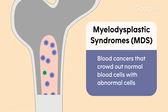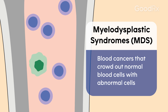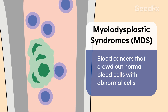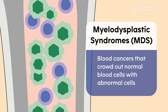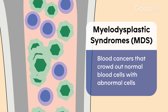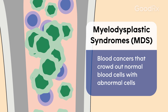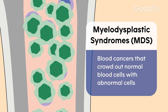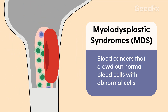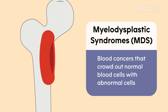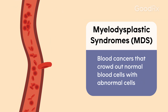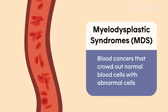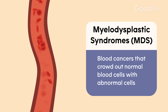In myelodysplastic syndromes, or MDS, the abnormal MDS cells take over the bone marrow and lead to many immature stem cells that crowd out the normal stem cells. That leads to decreased production of normal red blood cells, leading to anemia.